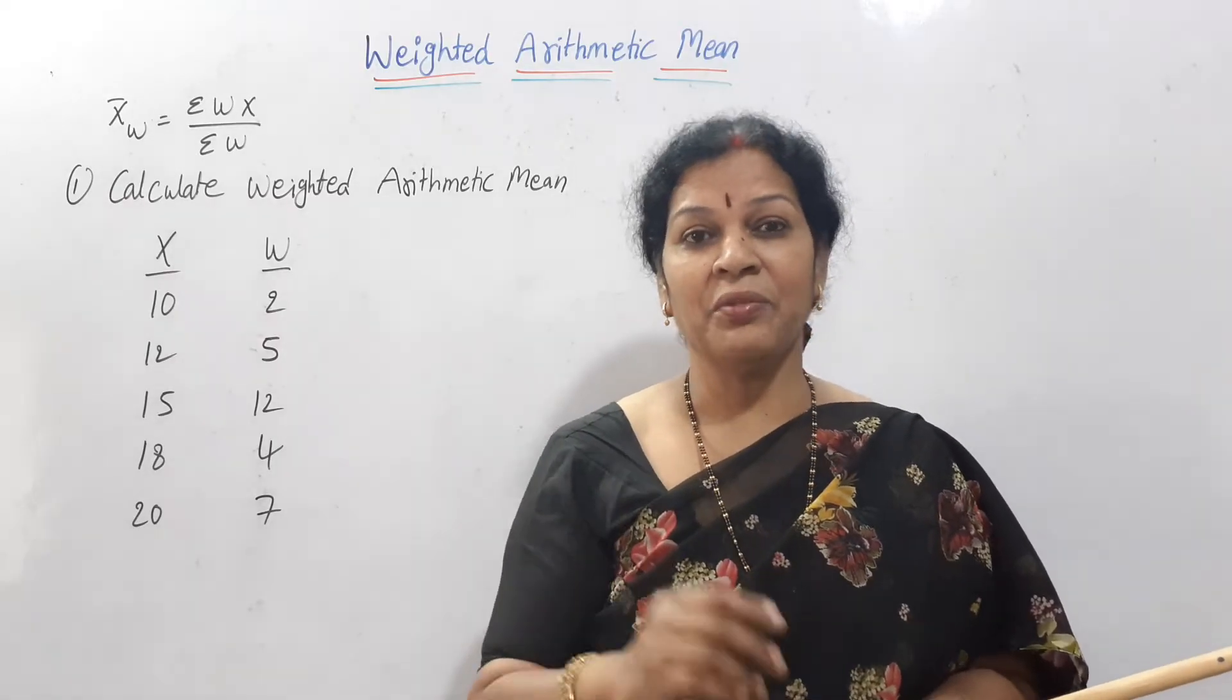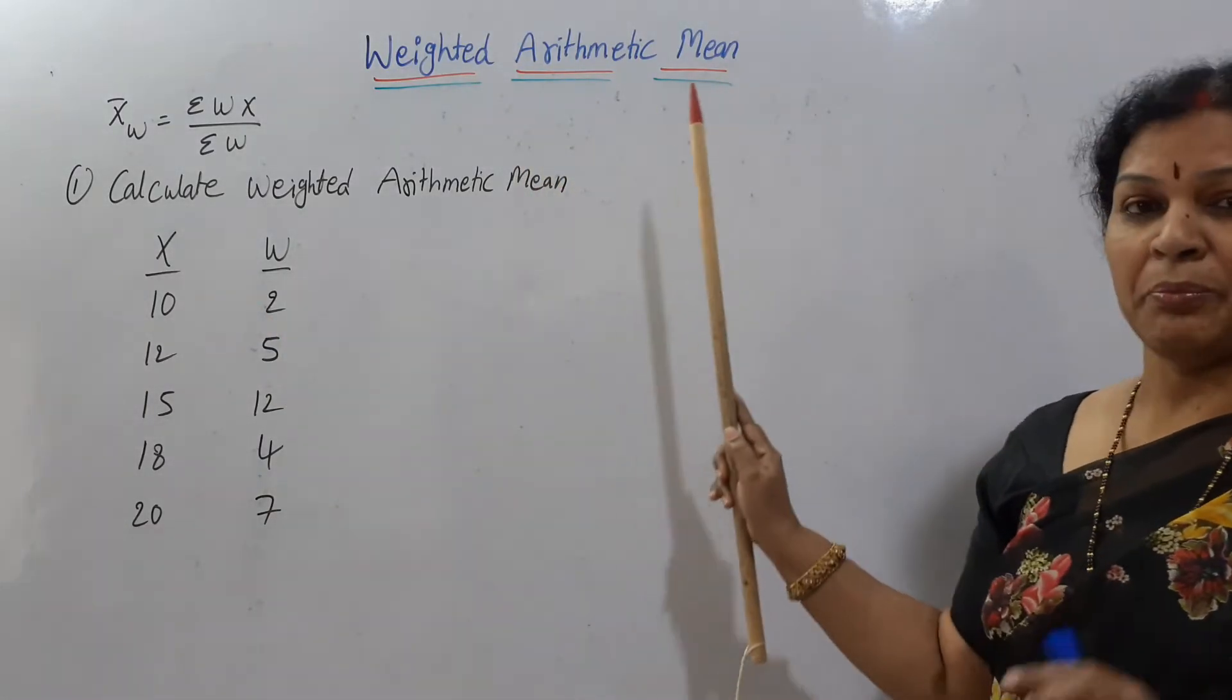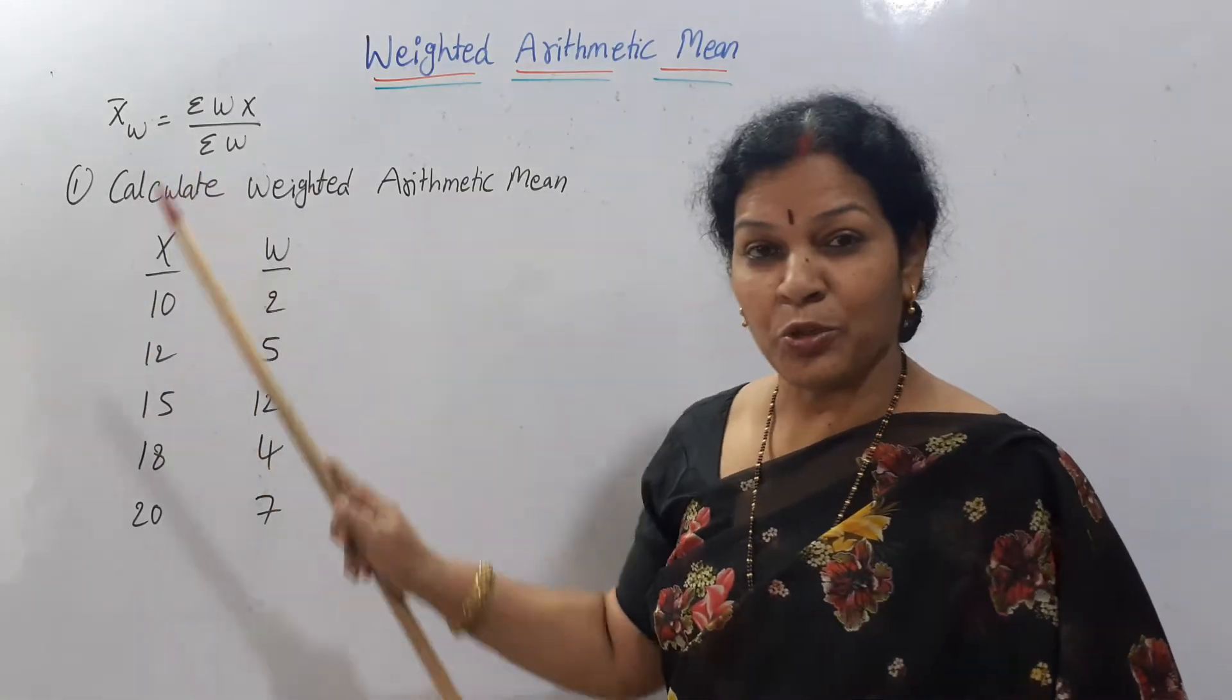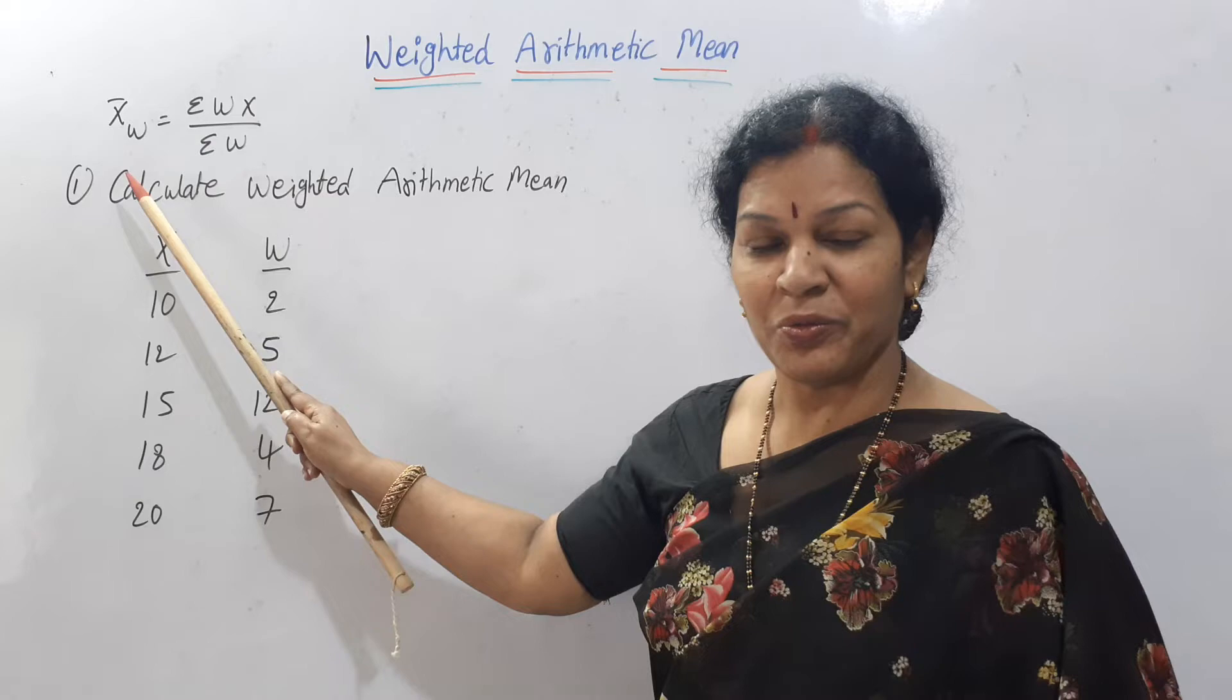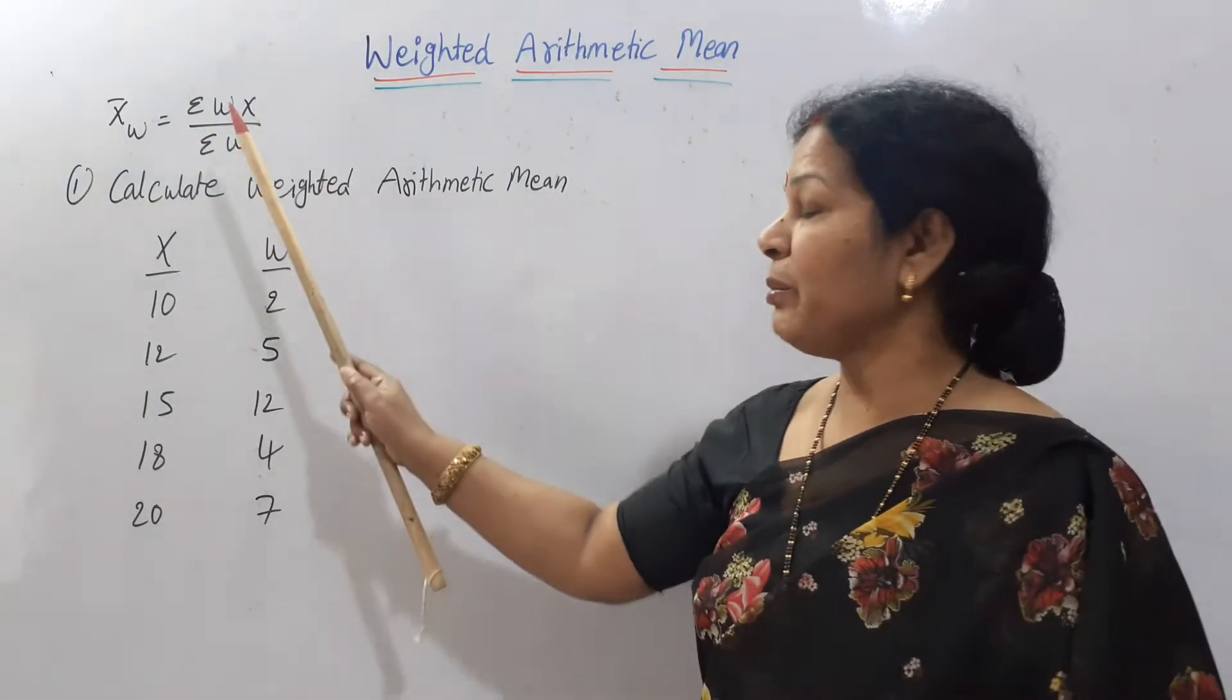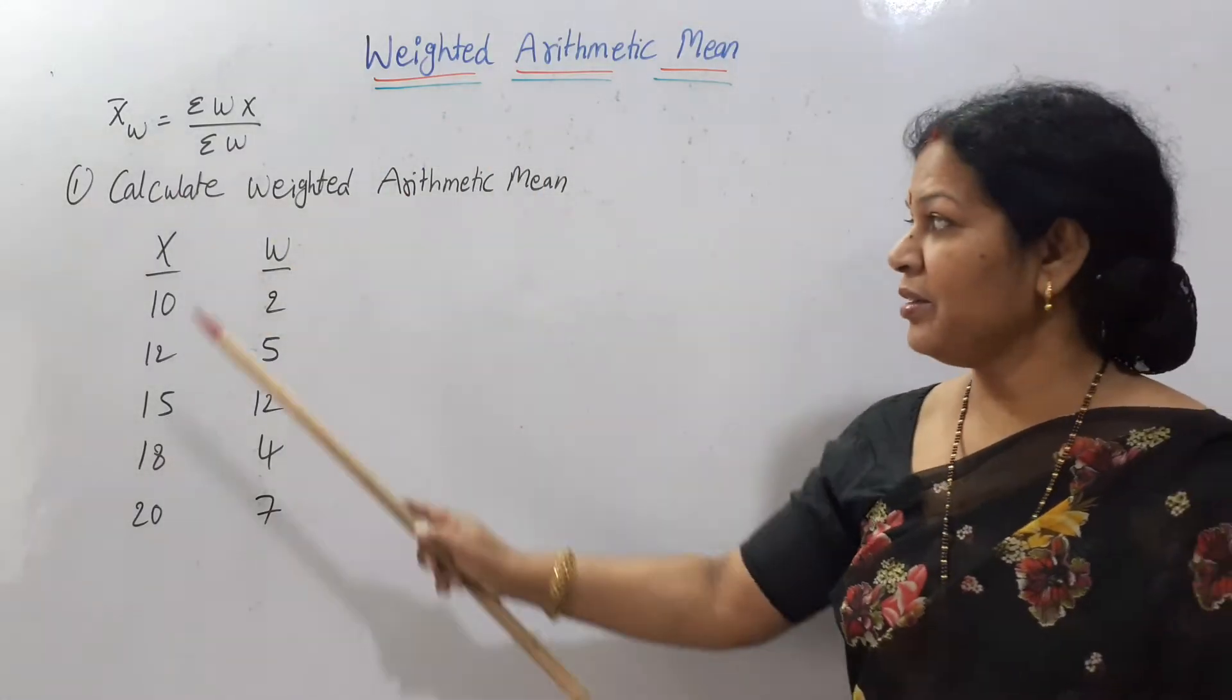Through a problem you can understand weighted arithmetic mean. How to understand the formula? x̄ means arithmetic mean. x̄w means weighted arithmetic mean. The formula is x̄w = Σwx/Σw. This is the formula.